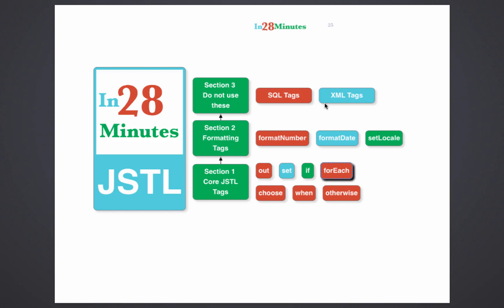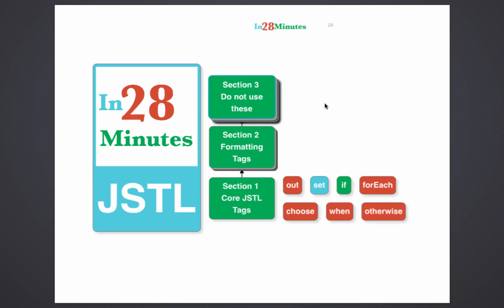Welcome to this tutorial on JSTL in 28 minutes. JSTL is quite a simple topic so this will be a short video. We'll talk about the core JSTL tags like c:out, c:set, c:if, c:forEach, and c:choose. Then we'll look at a few formatting tags: formatNumber, formatDate, and setLocale. At the end we will look at things you should not use — JSTL provides tags like SQL and XML which are not things we should ideally do in a JSP. Let's get started with the core JSTL tags.